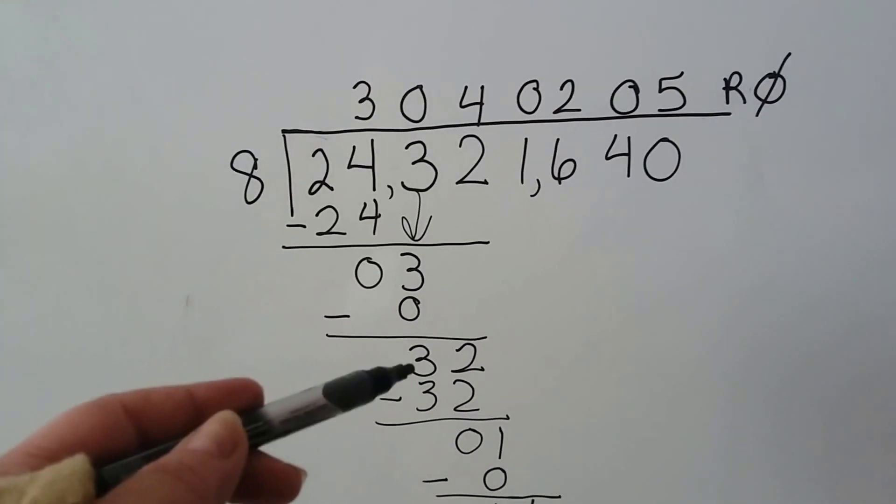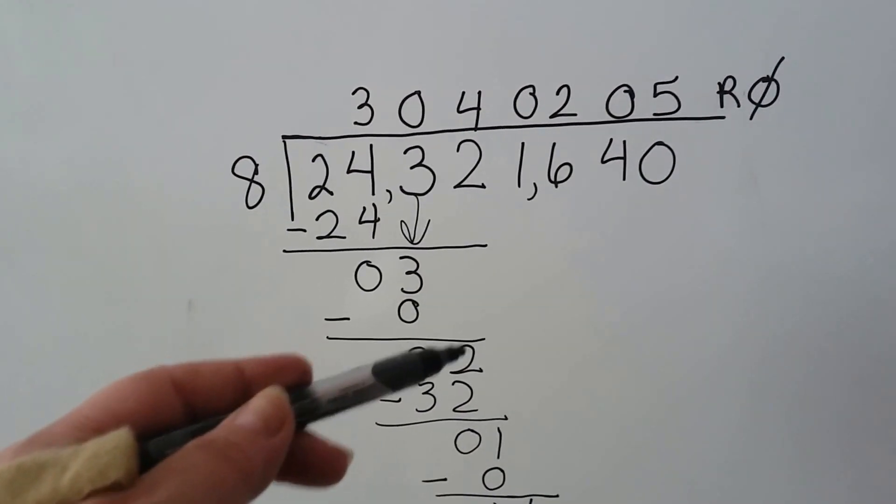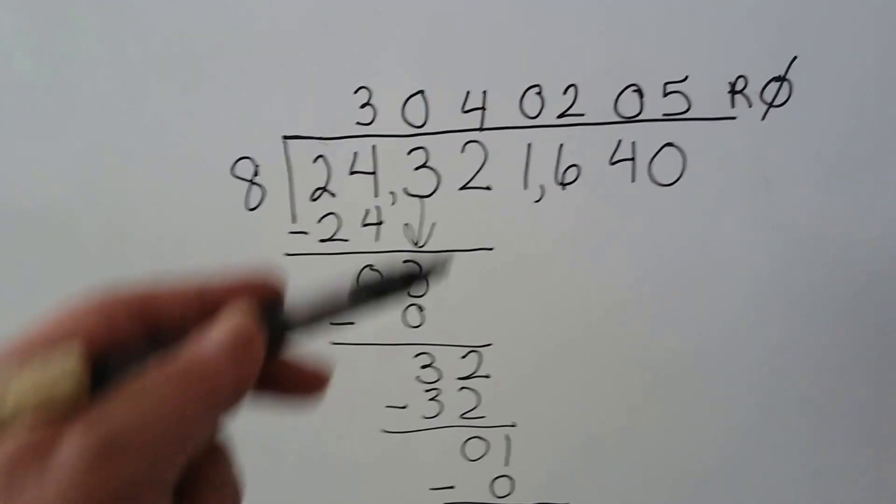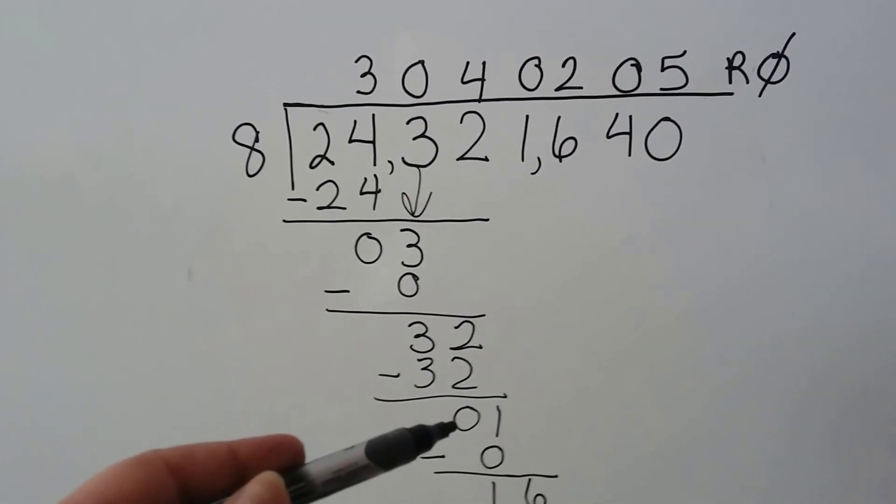And zero times eight is zero. We do our subtraction, and the three comes down, and now it's the two's turn to come down. Eight can go into 32 four times evenly. That's going to give us a zero again.